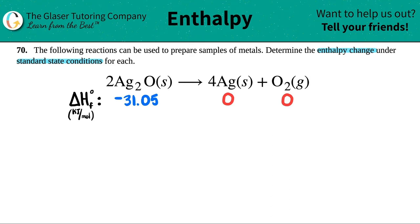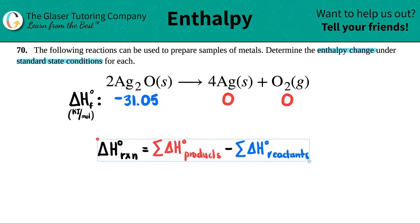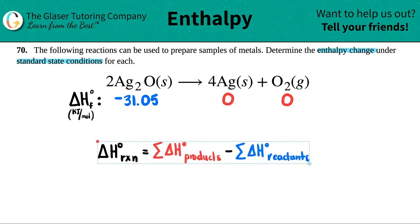All right, so now if I want to find the enthalpy change for the whole reaction, in this case 2Ag2O yields 4Ag plus O2, there's a formula and it's this one right here. It looks a little bit intimidating, but it's not. The delta H for the whole reaction is just equal to the sum of all the delta H's of the products minus the sum of all the delta H's of the reactants. These little notch values just means that they are standard state, coming from the tables.